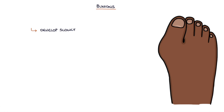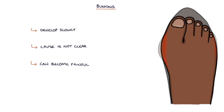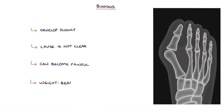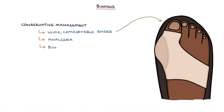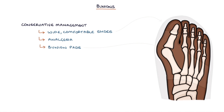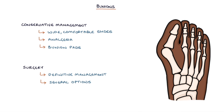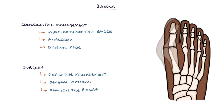Bunions develop slowly. The cause is not clear, and they can become painful particularly when walking and wearing tight shoes. Weight-bearing X-rays can be used to assess the extent of the deformity. Conservative management is with wide, comfortable shoes and analgesia. Patients can use bunion pads to protect the bunion from the inside of their shoes. Surgery is the definitive treatment, with several options depending on individual factors, aiming to realign the bones and correct the deformity.